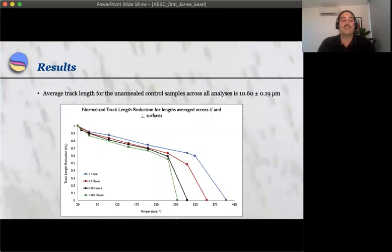In all annealed samples, the mean equivalent confined track length was always less than that of the unannealed control samples, which means over the temperature range studied, no conditions have been identified where the tracks are totally stable, even for experiments conducted at 30 degrees Celsius.